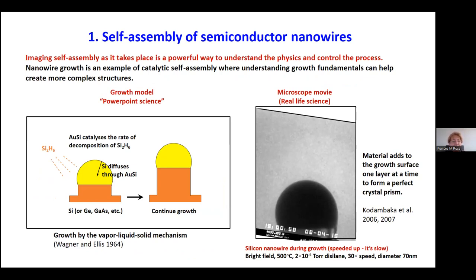Let's start by looking at self-assembly of semiconductor nanowires. This process was first developed in the 1960s and often illustrated by what you might call PowerPoint science. In nanoscience, things are too small to see, so we draw diagrams of what we think is going on without necessarily having proof. In this case, we really do have proof. The process we're interested in: you start with a liquid droplet with catalytic properties arising from its disordered surface with high sticking probability. We place this droplet onto a crystalline silicon substrate and then provide silicon growth material in the form of a reactive gas like disilane.